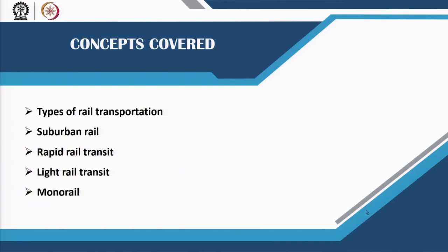In this lecture we will look at the different types of rail transportation, especially focusing on urban rail transportation. We will look at suburban rail, then start looking at mass rapid transit systems of metros, light rail, as well as give you an overview of what monorail is, how it can be planned for, and what their capacities are.